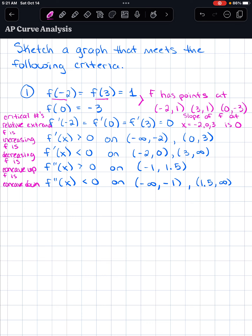I recommend always taking the time to analyze in words because it helps you think through what's happening. Using all of that information, we're going to sketch the curve. I'll plot the points: negative 2 comma 1 is here, 3 comma 1 is here, and 0 comma negative 3 is here. Those are from the first two lines of information, and we know there is potential for extrema at those three critical numbers.